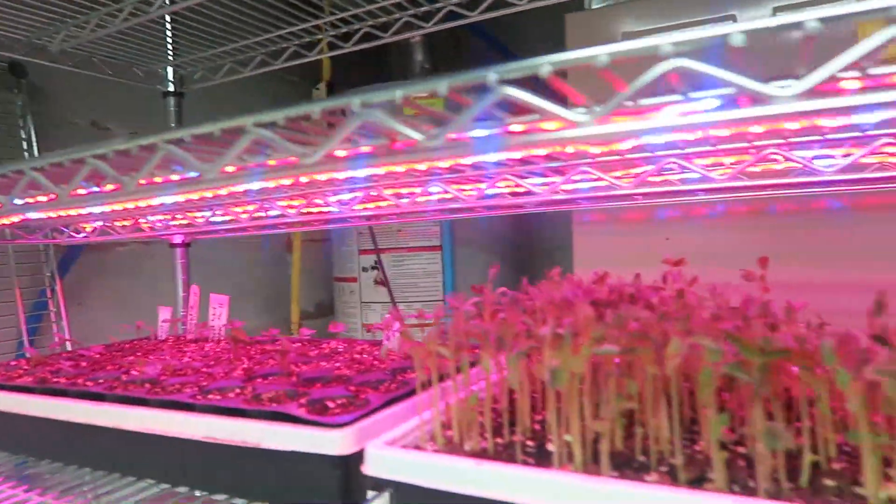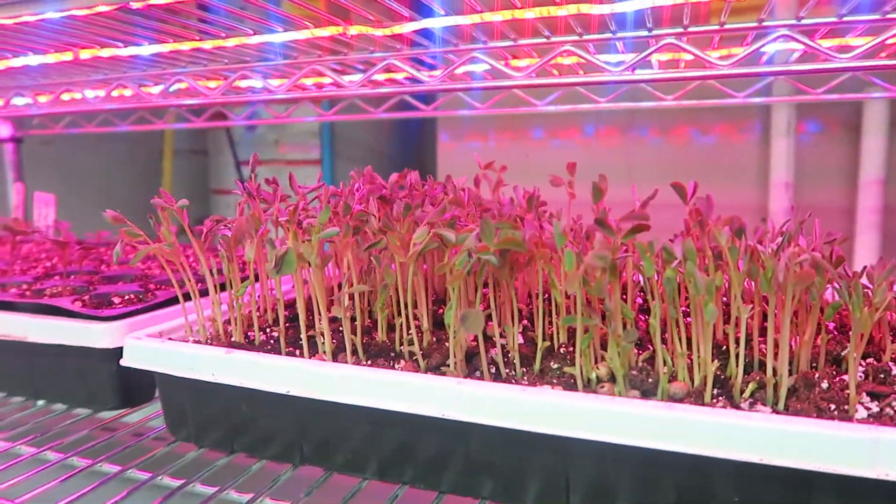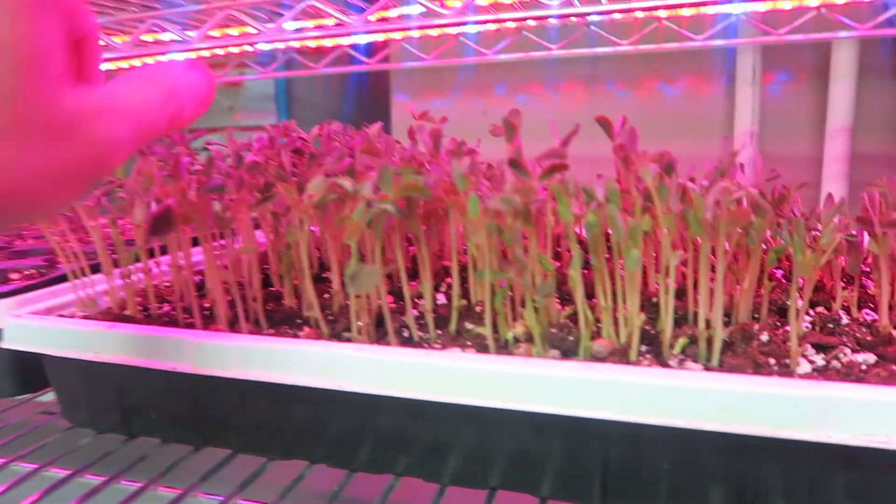And if you look at this one here, you can see these pea shoots are about three, four inches now. And there's still a lot of room that they have to grow.